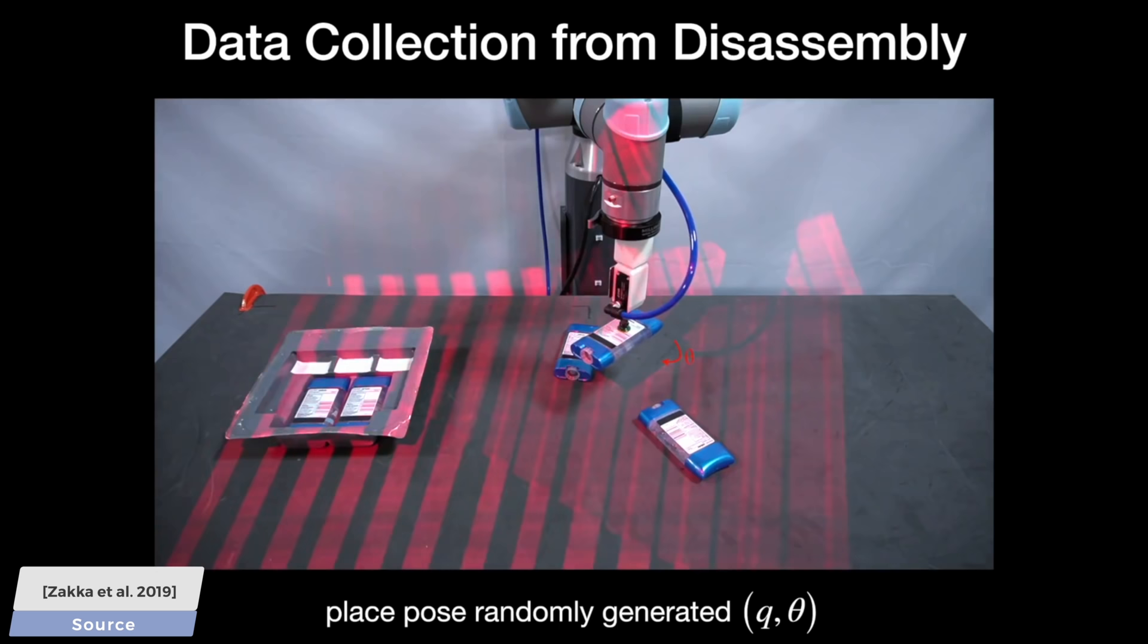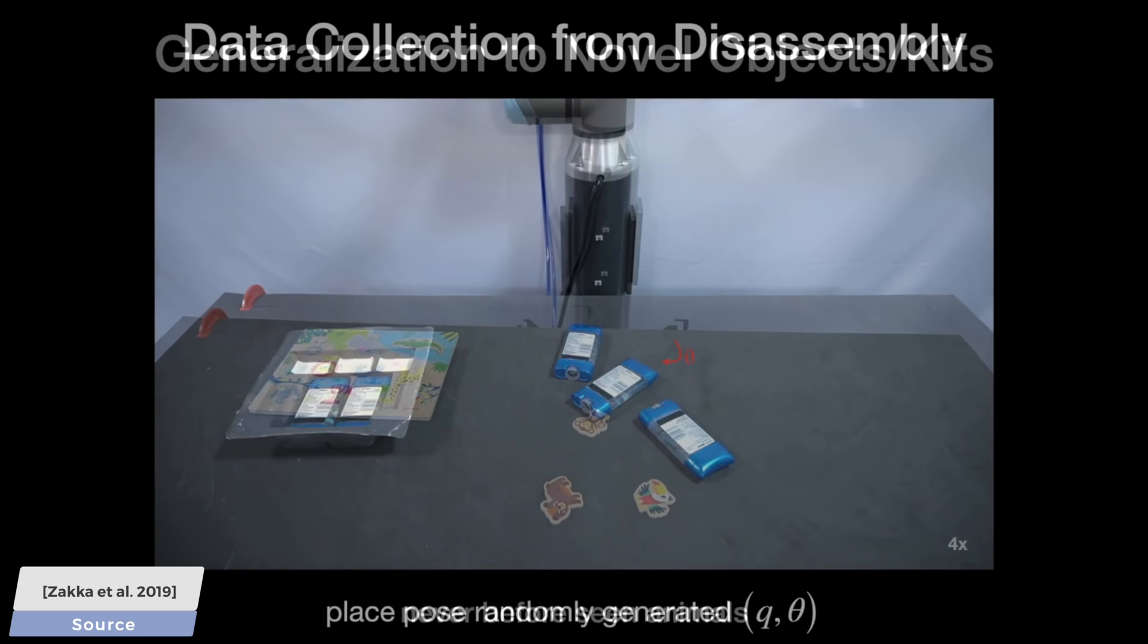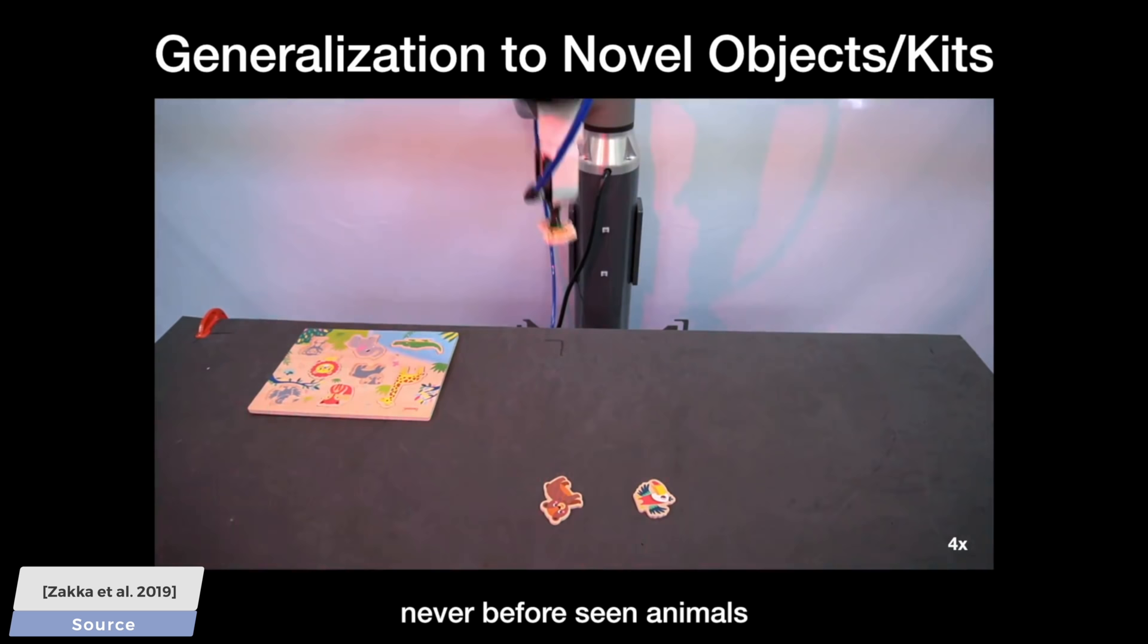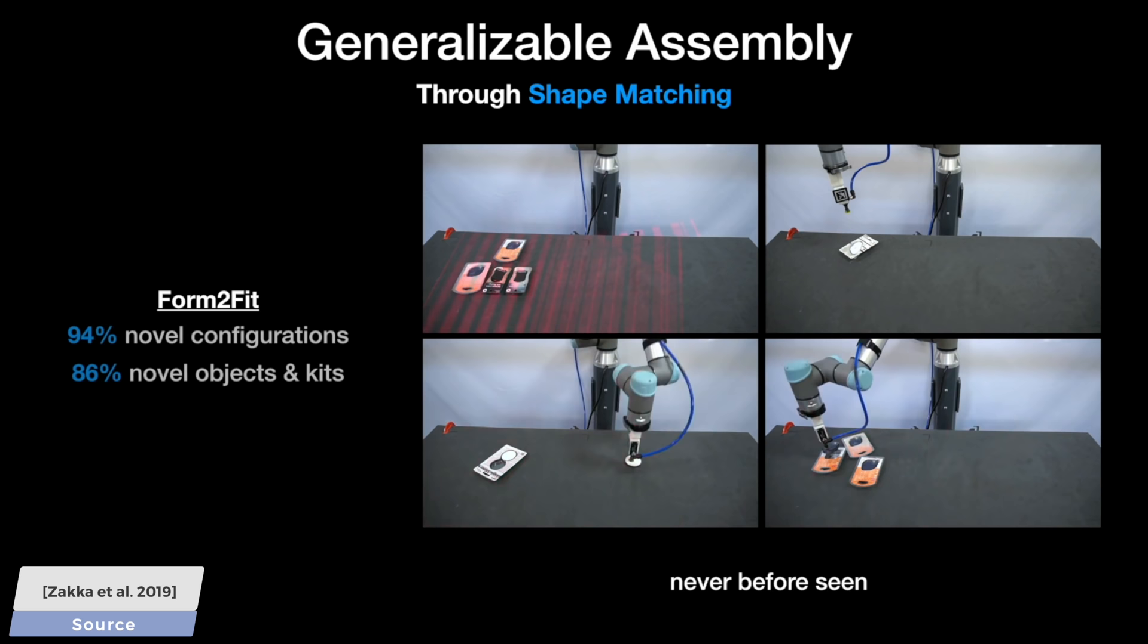However, with this technique, after the learning process took place, we will be able to give it a new, previously unseen object, and it will have a chance to assemble it. This requires intelligence to perform. So, how good is it at generalization? Well, get this, the paper reports that when showing it new objects, it was able to successfully assemble new, previously unseen contraptions 86% of the time. Incredible.